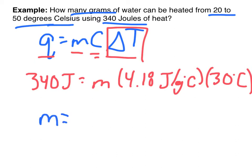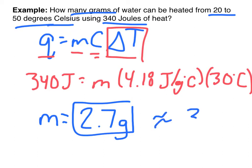So when I solve for M, what do I get? Again, I get about 2.7 grams. And if we're using significant figures, again, we only have one significant figure. So that would round to just 3 grams. All right? And again, that's how we solve Q equals MCAT problems.